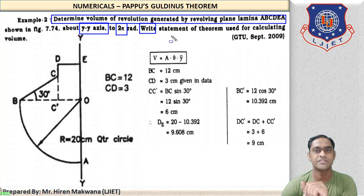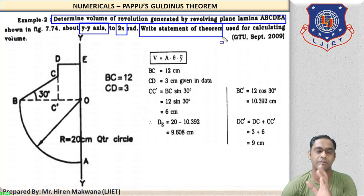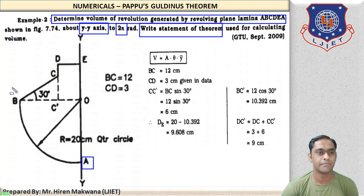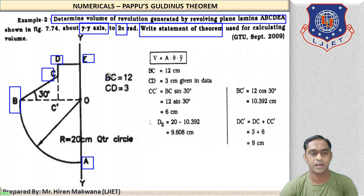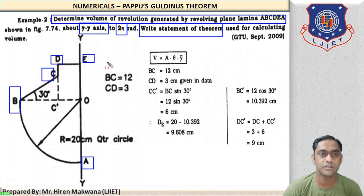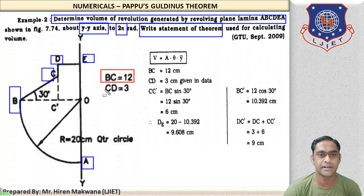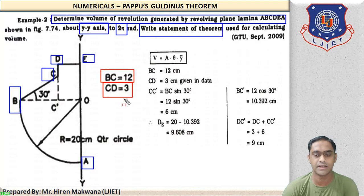Now write the statement of the theorem as well, though we have already discussed it in the theory portion. The data given in the numerical: BC = 12 cm and CD = 3 cm.